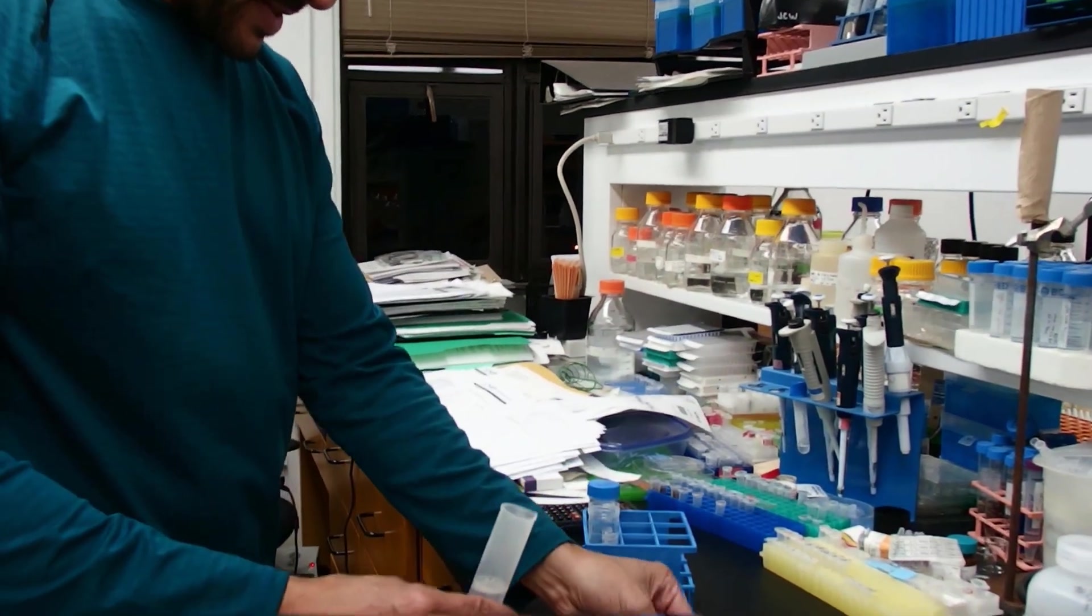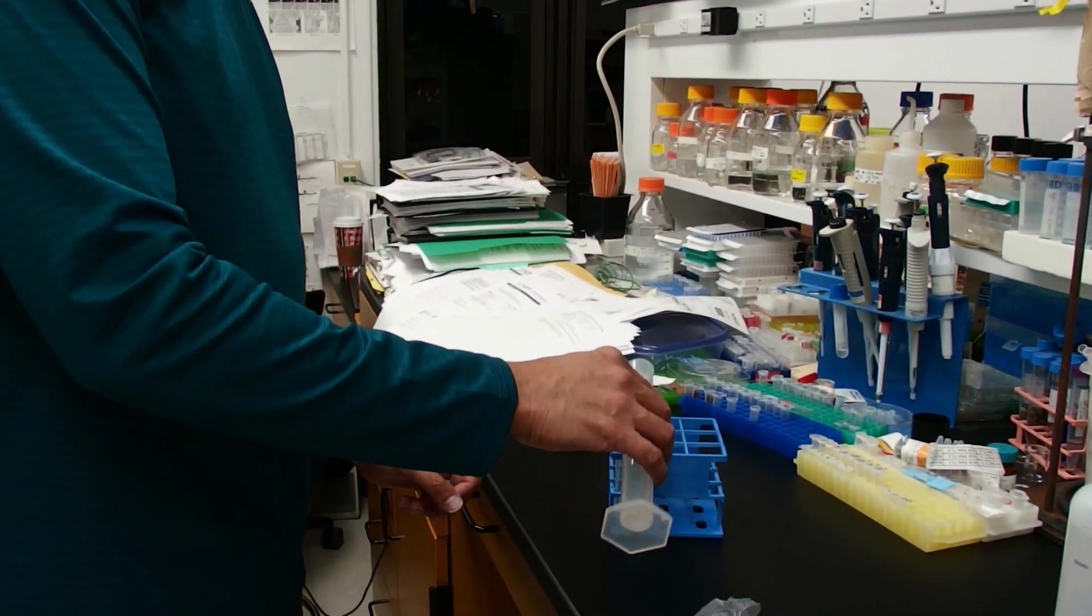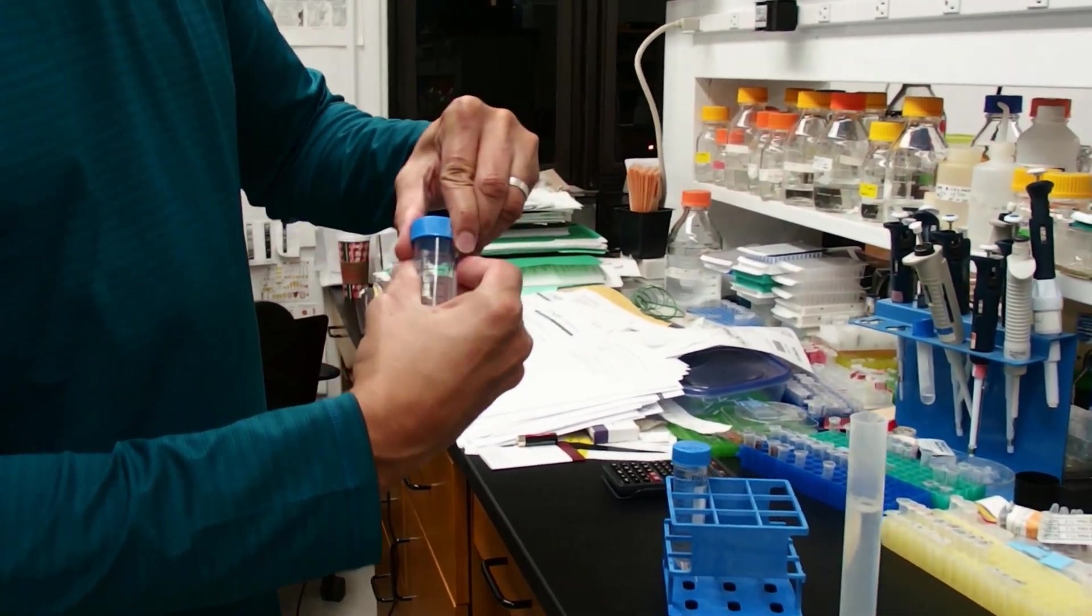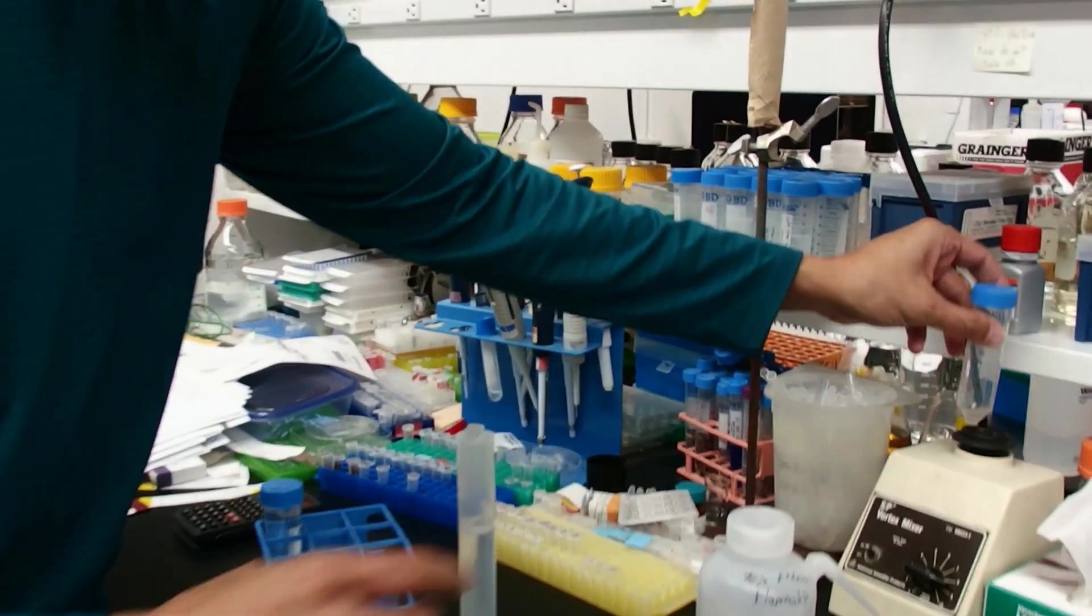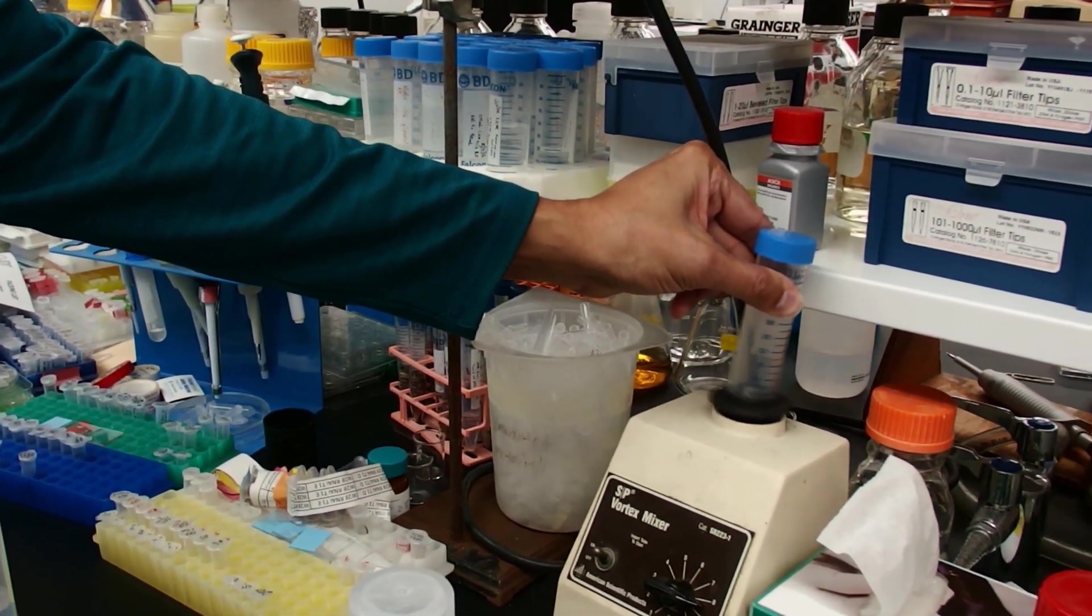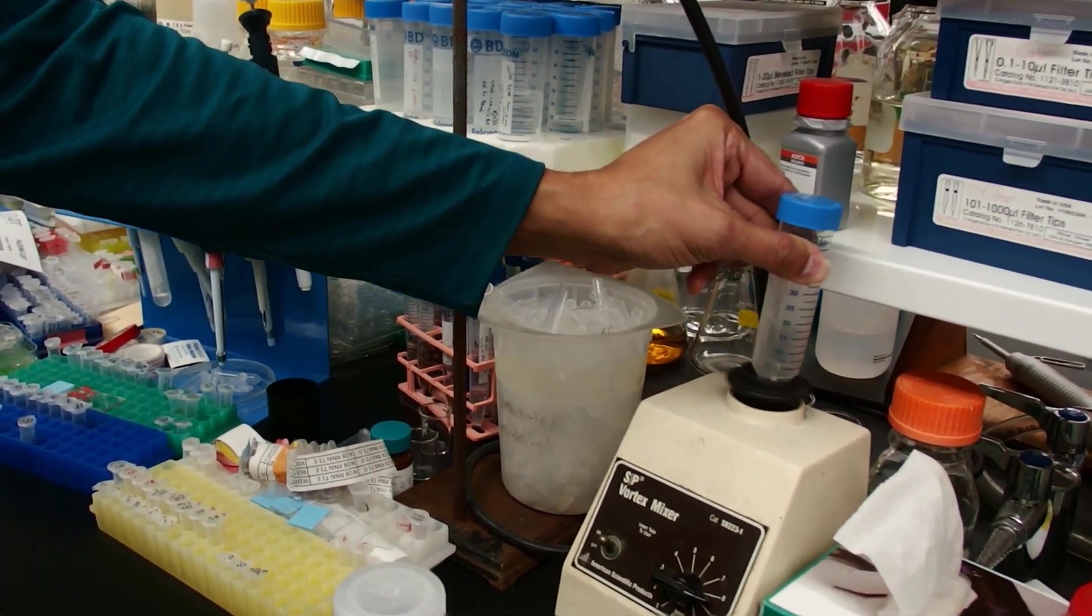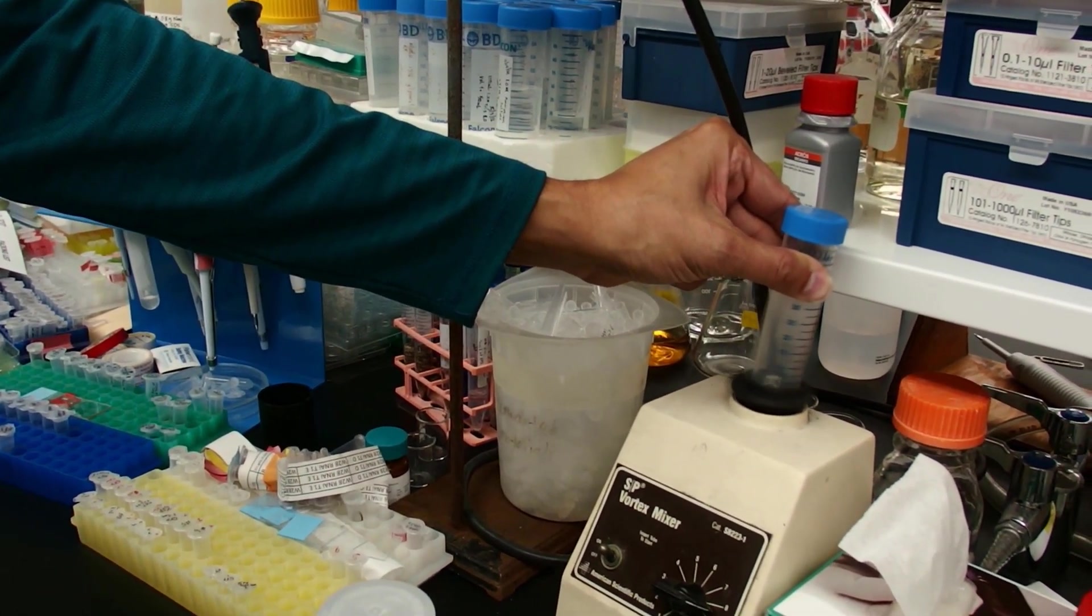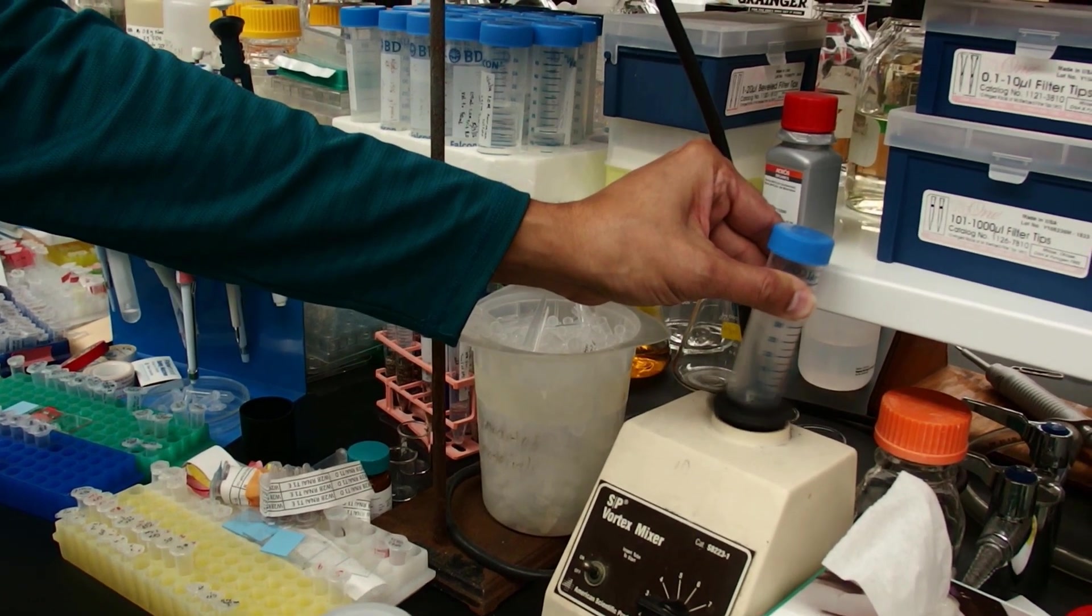I'm just going to add a small amount to my pellet. And then I'm going to vortex this. I'm going to try to break up that pellet. The reason for adding a small amount first is actually you'll get the pellet resuspended a little bit quicker.